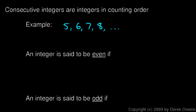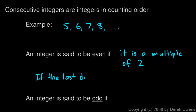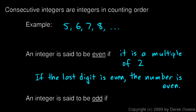Now, we also need to talk about even and odd numbers. A number is even if it is a multiple of 2. The easiest way to tell is simply to look at the last digit. If the last digit is even, then the number is even. So, the number 2,586,314 is even, because the last digit is a 4, and that's an even digit.